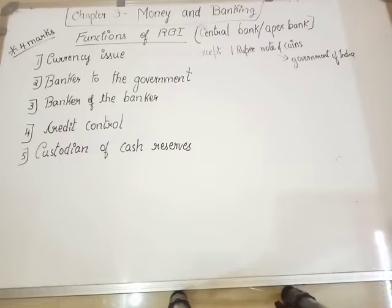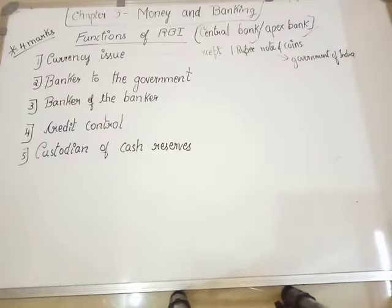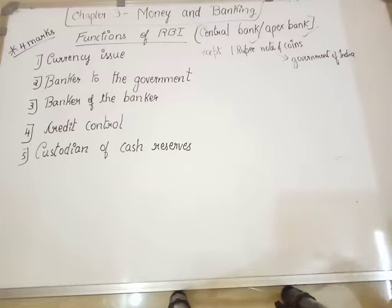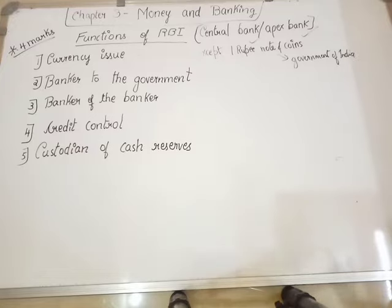What is RBI? RBI is Reserve Bank of India. It is also called as the Central Bank, or Apex Bank. Why do we call it as the Apex Bank or Central Bank? The term Central means it is prime, it is important, something that controls other things. So RBI is a bank which controls and regulates the functions of other banks in the country.